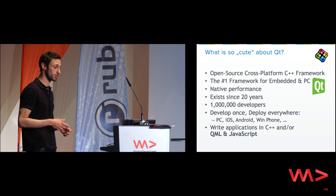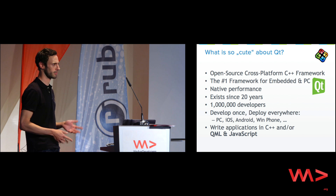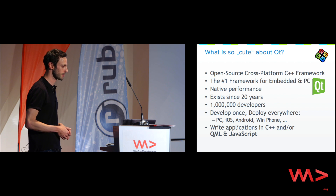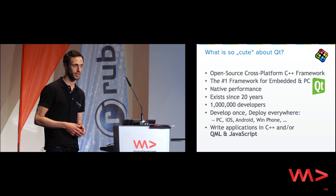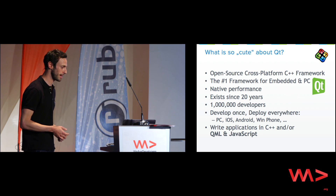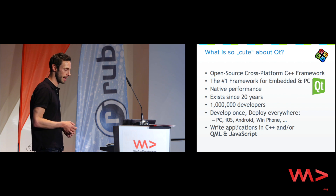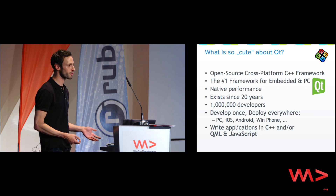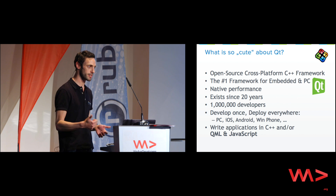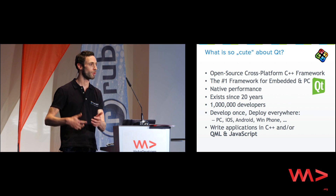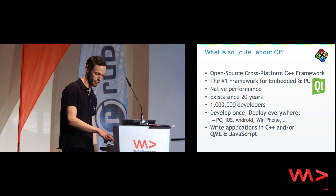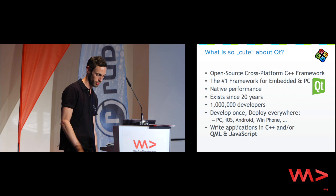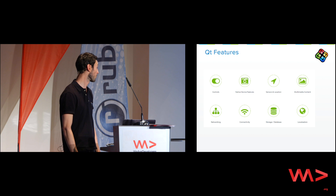Qt is the number one cross-platform framework for desktop and PC. It's existed for more than 20 years now, has about a million active developers, and it's usable for PC — so Windows, Mac and Linux — as well as iOS, Android, Windows Phone, and embedded platforms. The way you write applications in the Qt framework is either with C++ traditionally, or with QML and JavaScript, and I'll focus on these parts now because these are the most relevant ones nowadays.